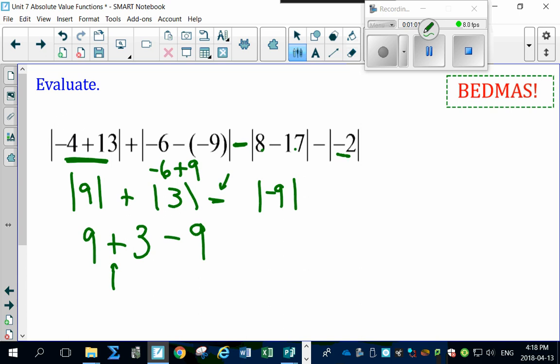And then finally, here's our subtraction of an absolute value. I'm going to subtract the absolute value of negative 2. The absolute value of negative 2 works out to be 2.